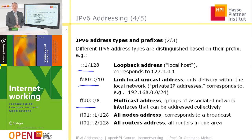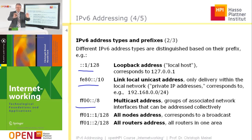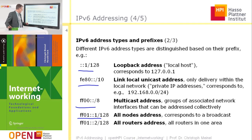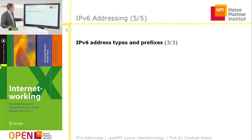The multicast address is used to send a message to a number of different members simultaneously. Then there is the prefix FF01 for the all-nodes address, which corresponds to a broadcast in the traditional IPv4 world. There is also FF01 for sending messages to all routers in one area.